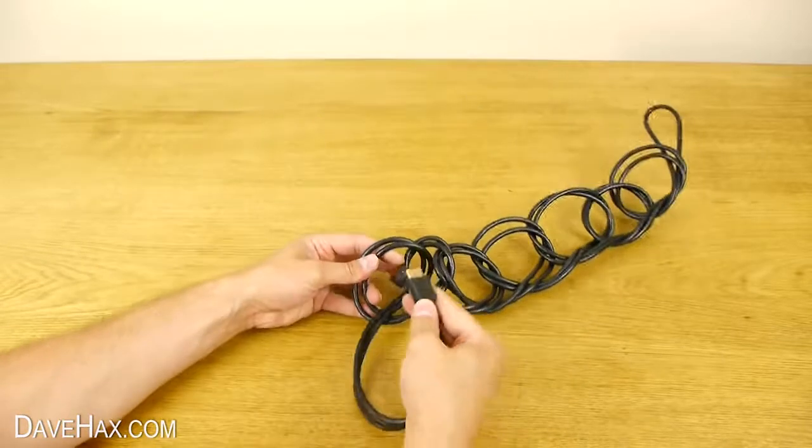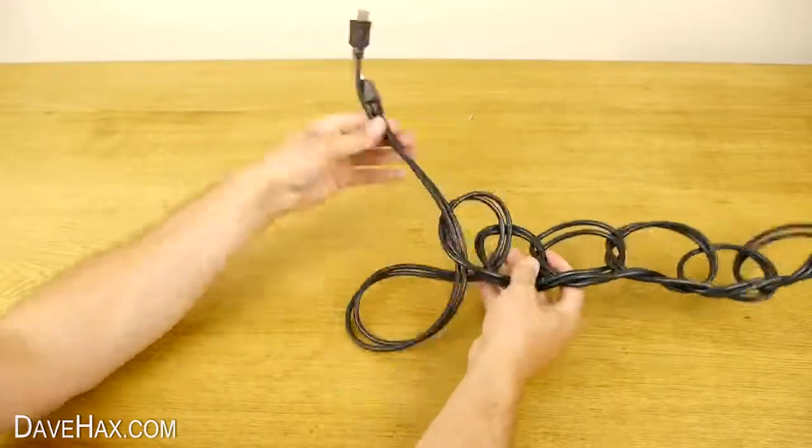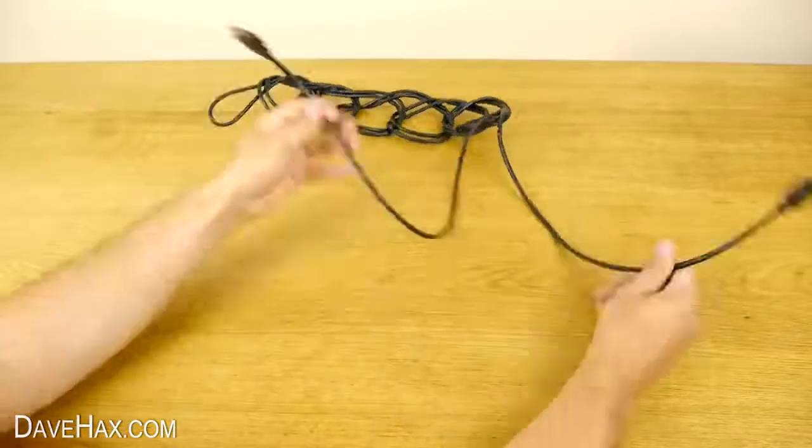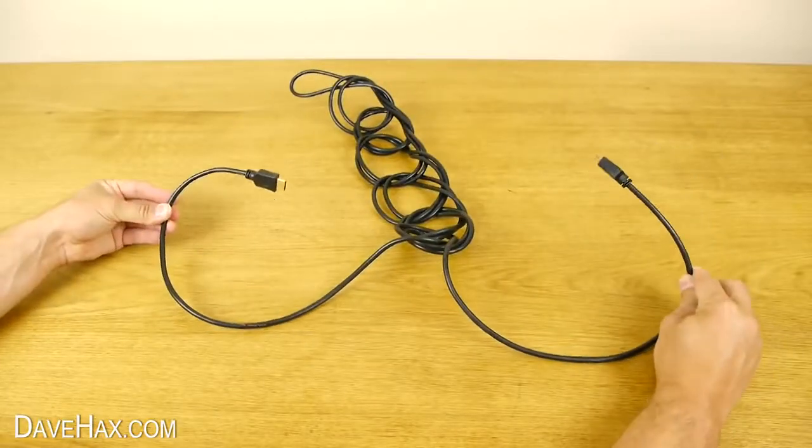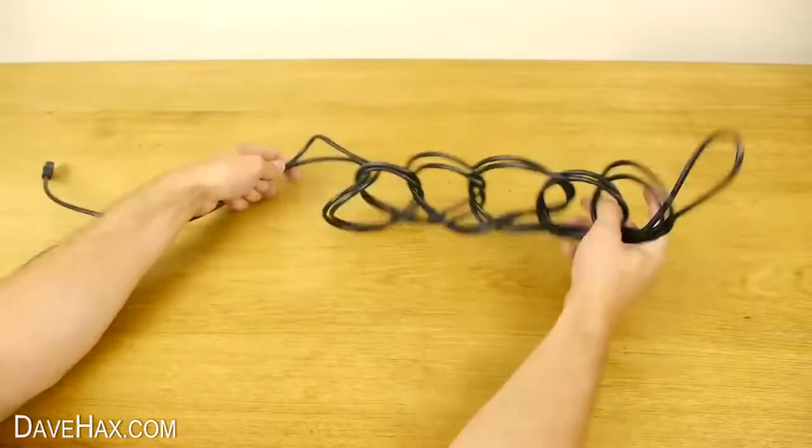To adjust the lead and make it a little bit longer, just undo the last link and tie it off again. And if you want to undo it all together, just untie the end and pull it all apart.